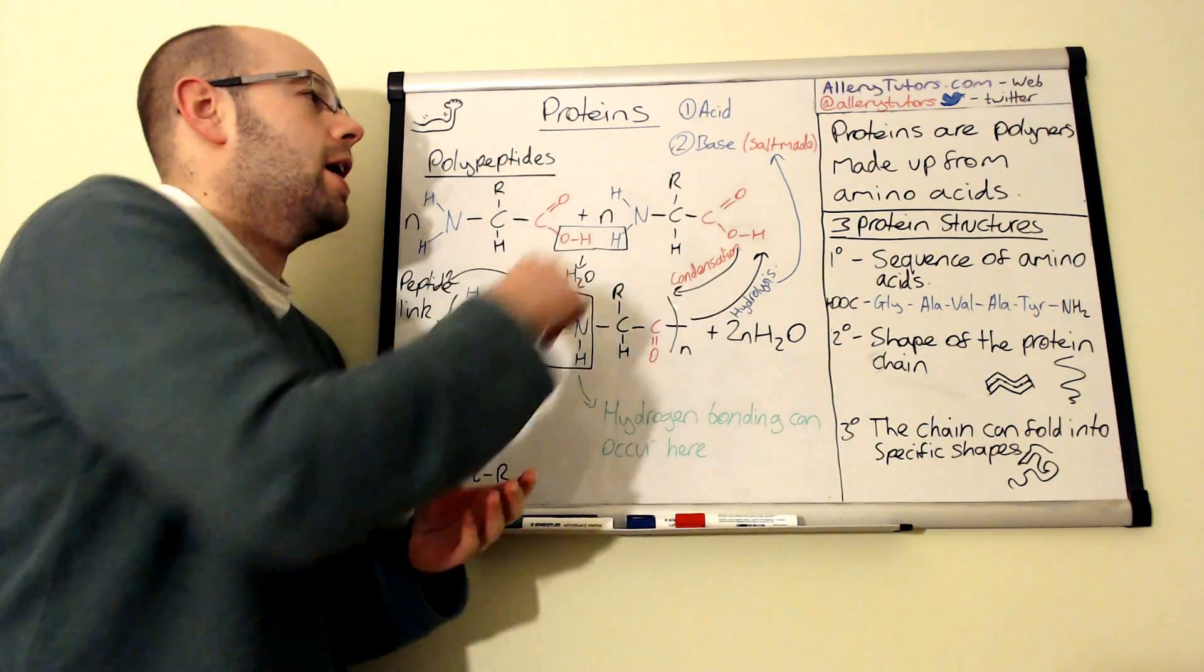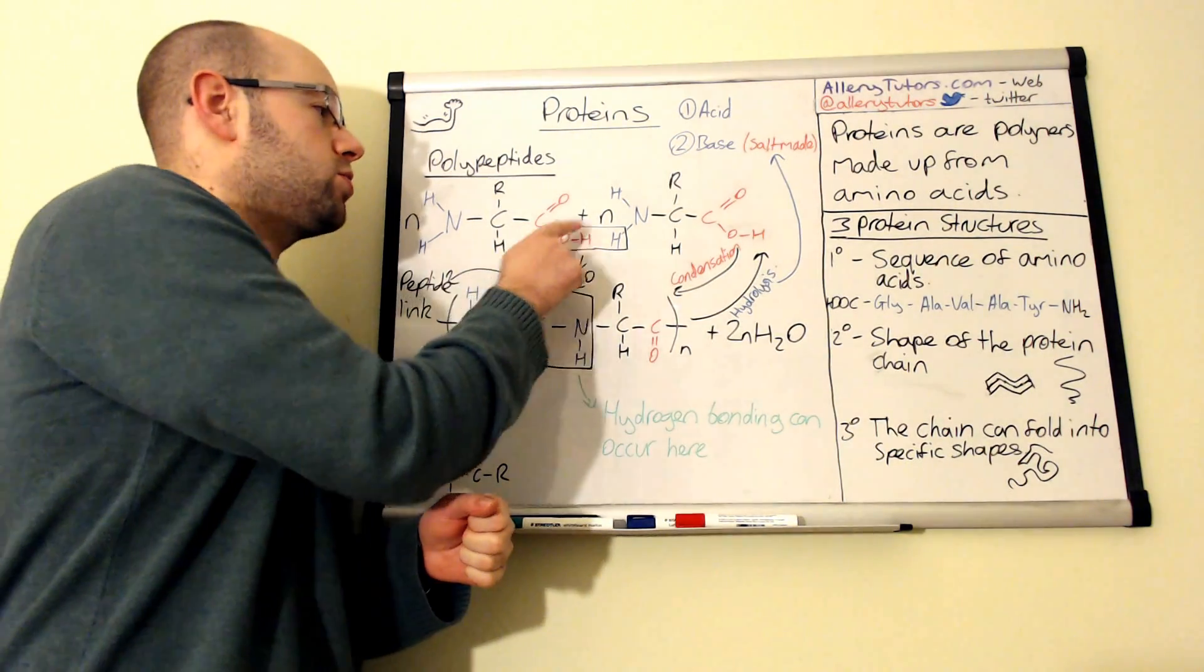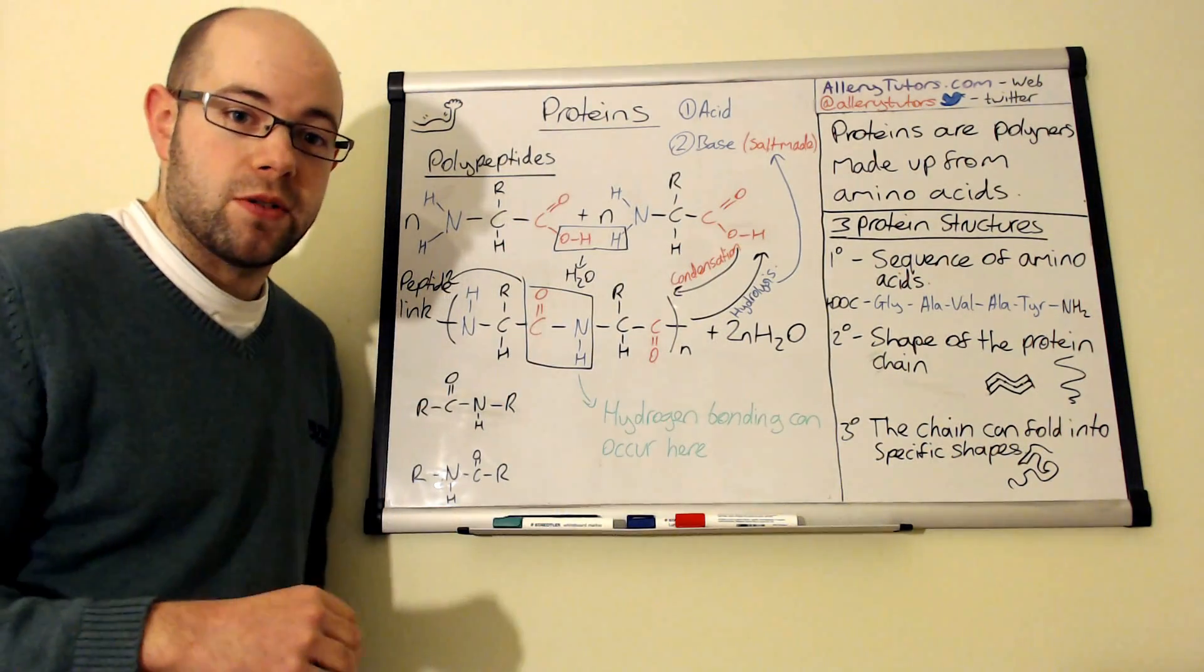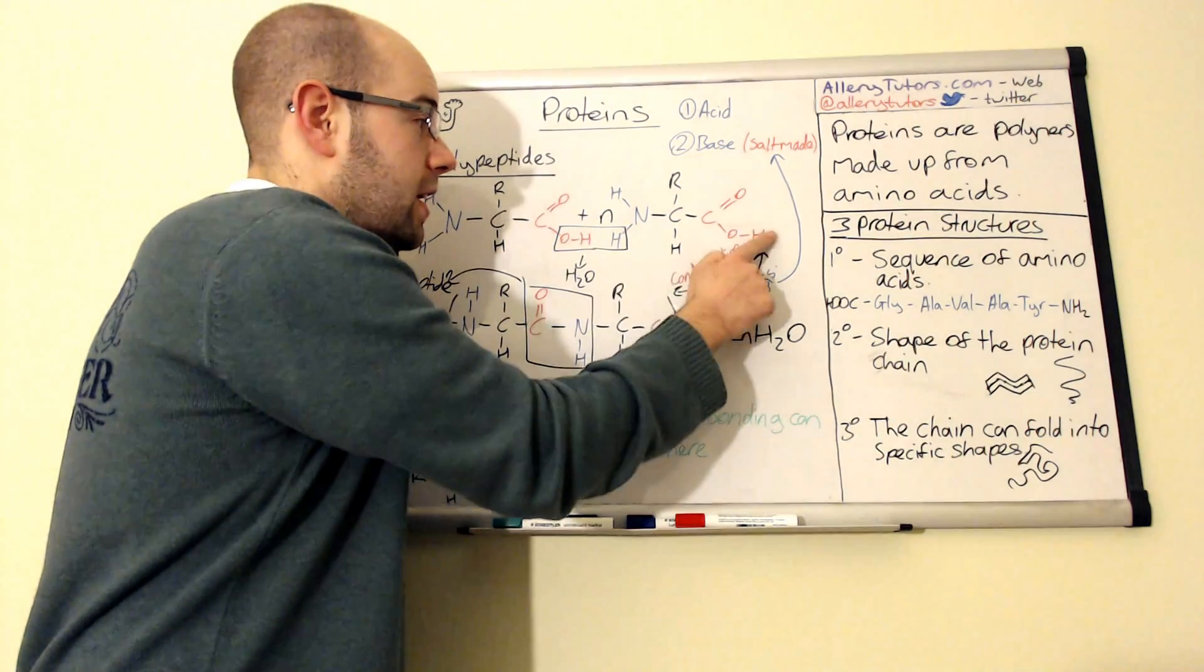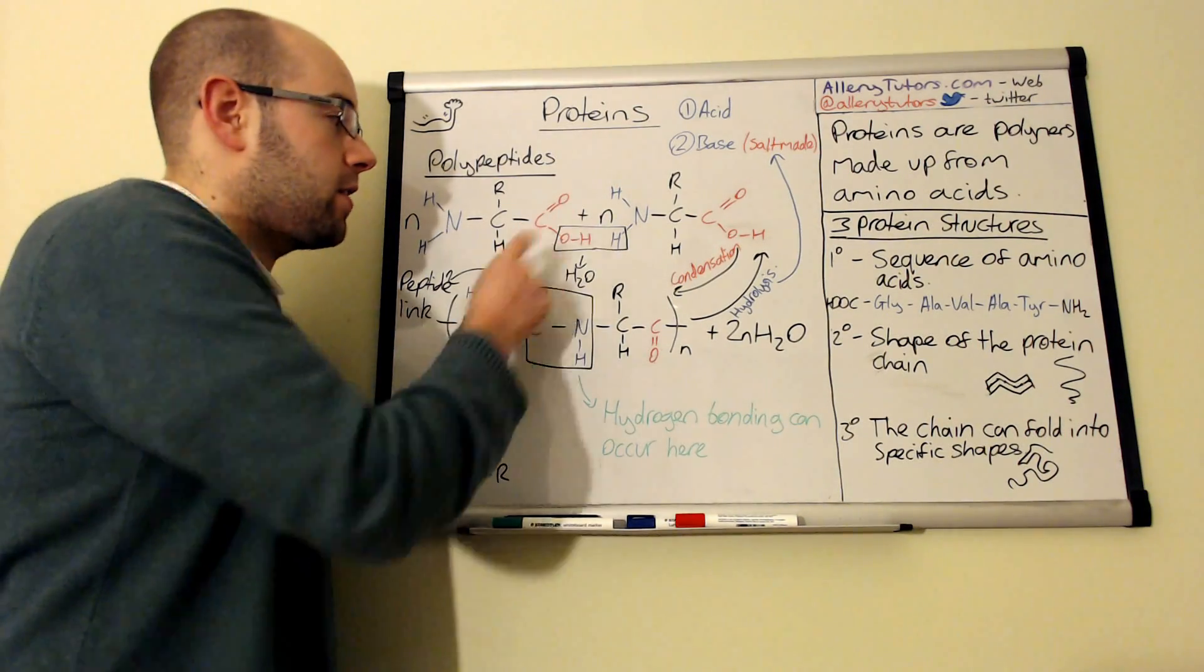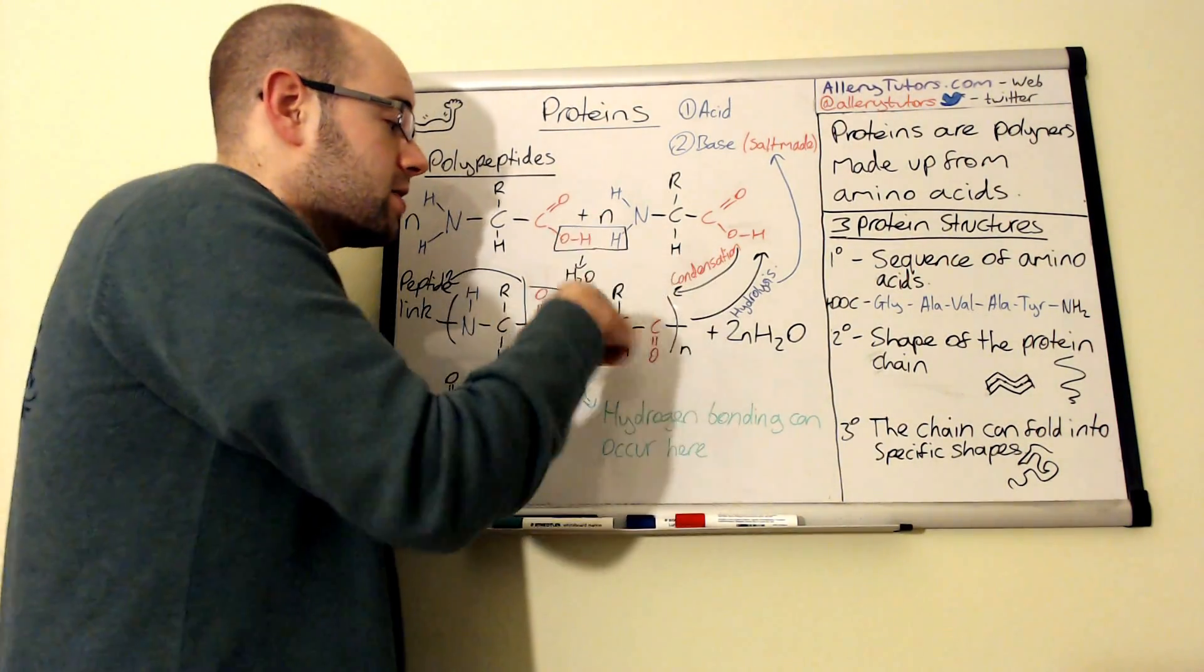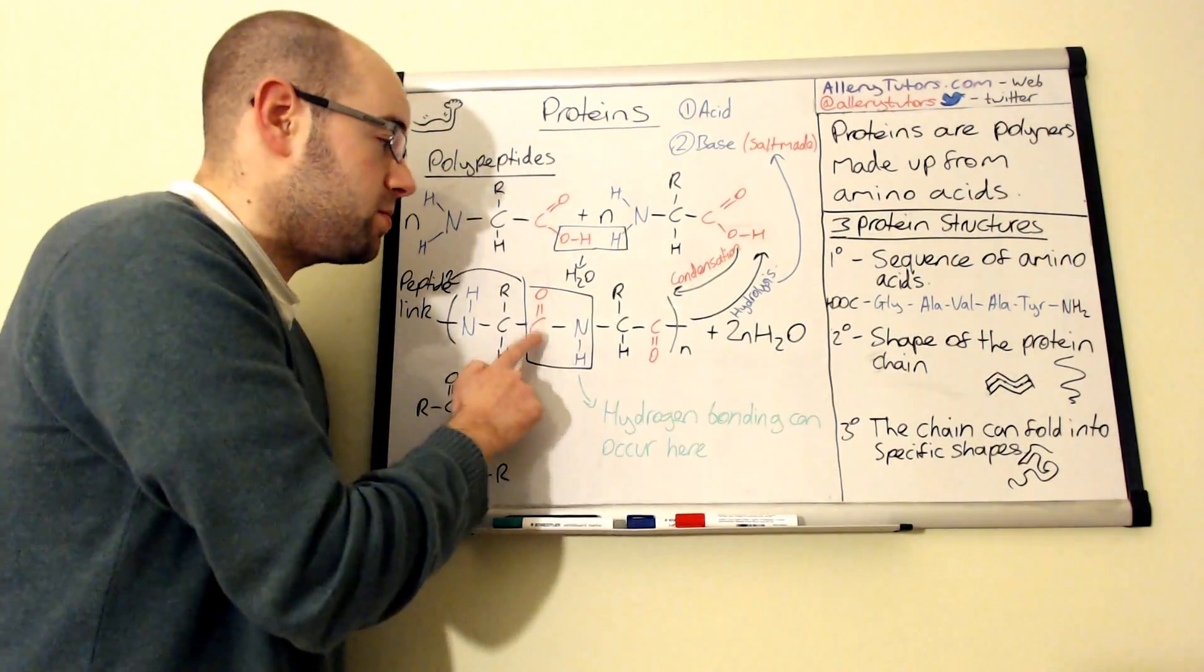You can do the same with base hydrolysis. The only difference is that instead of forming your two amino acids, what we effectively get is, depending on the base that we've used, which would be something like sodium hydroxide, instead of the proton on the end of your carboxylic acid, you have a sodium ion that hangs onto the end of there. It bonds ionically with your amino acid. So, we form a salt version of the amino acid. This is effectively how we can interact or what we can do with amino acids to make proteins and backwards.